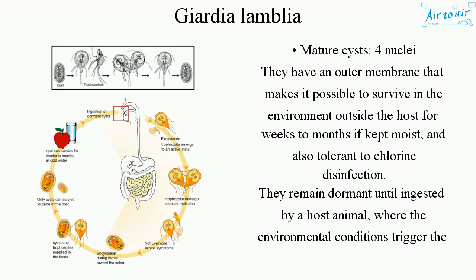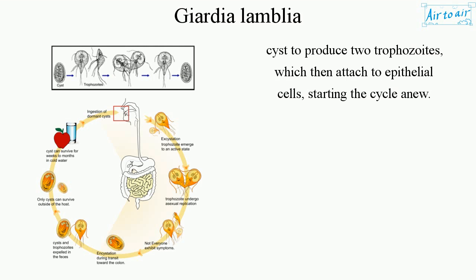Cysts are also tolerant to chlorine disinfection. They remain dormant until ingested by a host animal, where environmental conditions trigger the cyst to produce two trophozoites, which then attach to epithelial cells, starting the cycle anew.